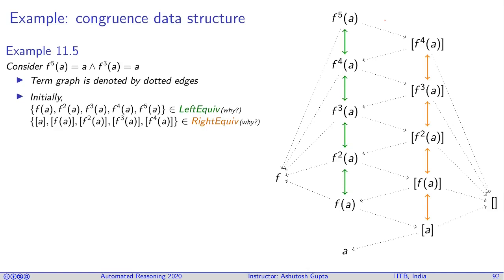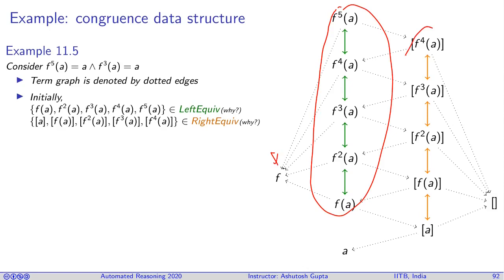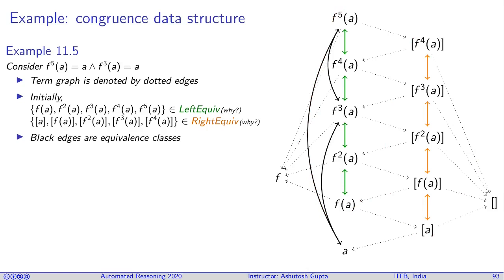Initially, certain nodes are placed in the same left-equi because they have the same left child, and similarly certain nodes are placed in the same right-equi because they share a common right child. We then introduce edges due to the given equalities. This makes F^5, F^3, and A belong to the same equivalence class, forming a circular linked list among them.